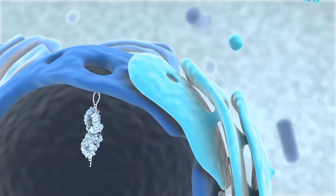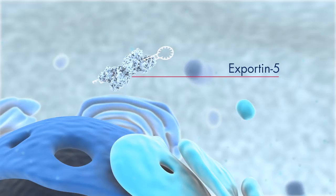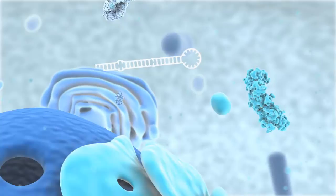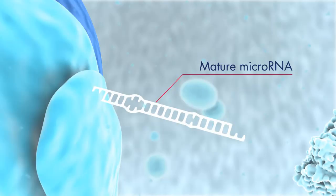Pre-microRNA associates with an Exportin-5 complex and is escorted from the nucleus into the cytoplasm. Once in the cytoplasm, the pre-microRNA is released from Exportin-5 and faces further processing by the Dicer complex. Dicer removes the stem loop from the pre-microRNA, resulting in an asymmetrical double-stranded RNA of 20 to 25 nucleotides.